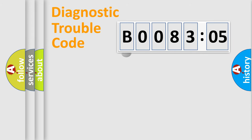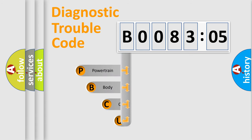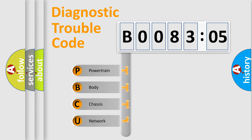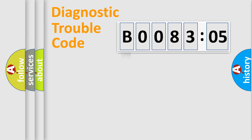First, let's look at the history of diagnostic fault code composition according to the OBD2 protocol, which is unified for all automakers since 2000. We divide the electric system of the automobile into four basic units: Powertrain, Body, Chassis, and Network.